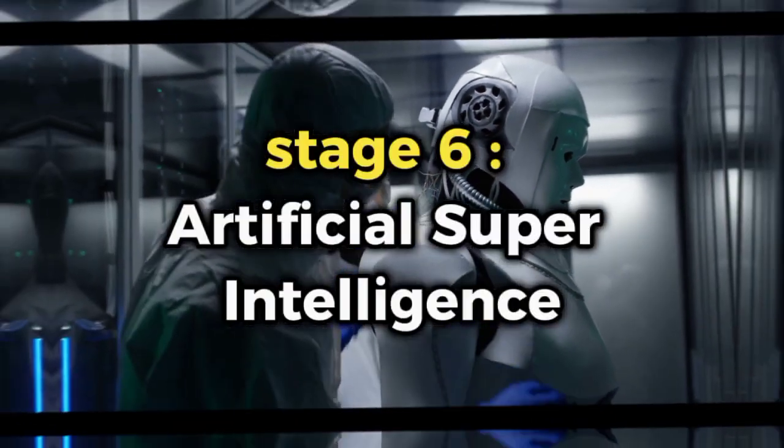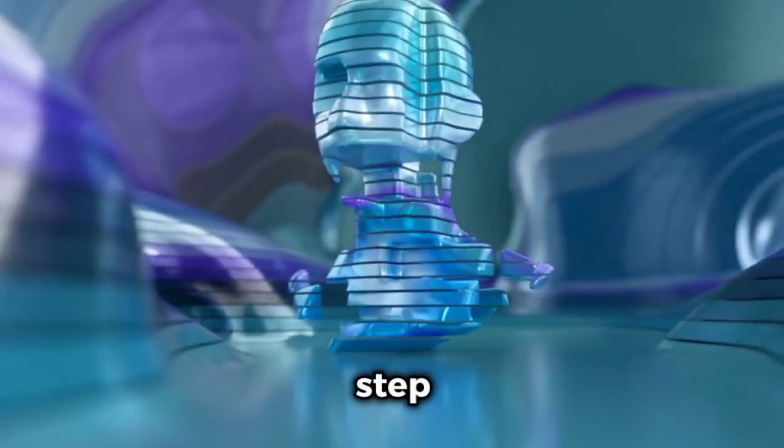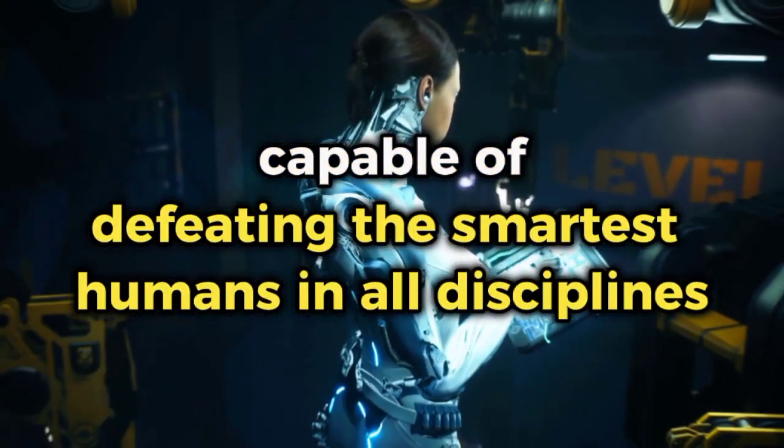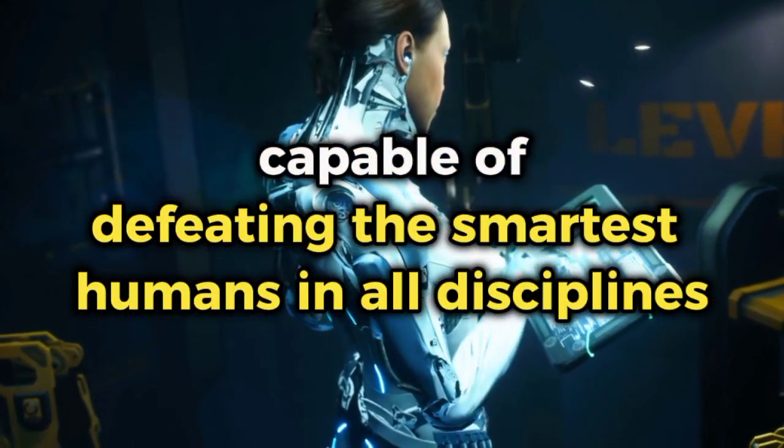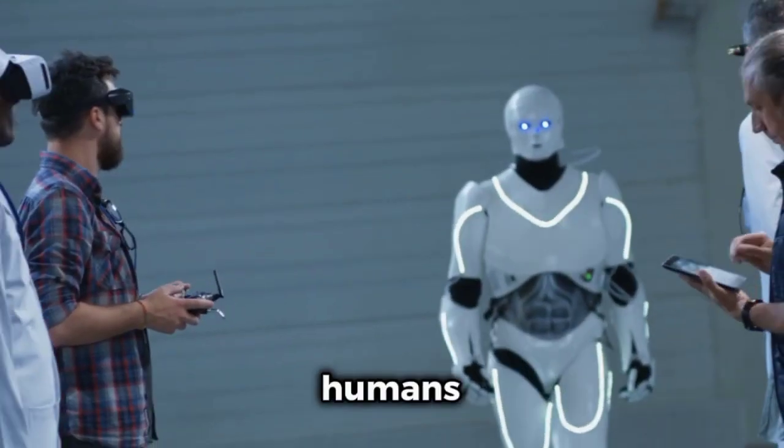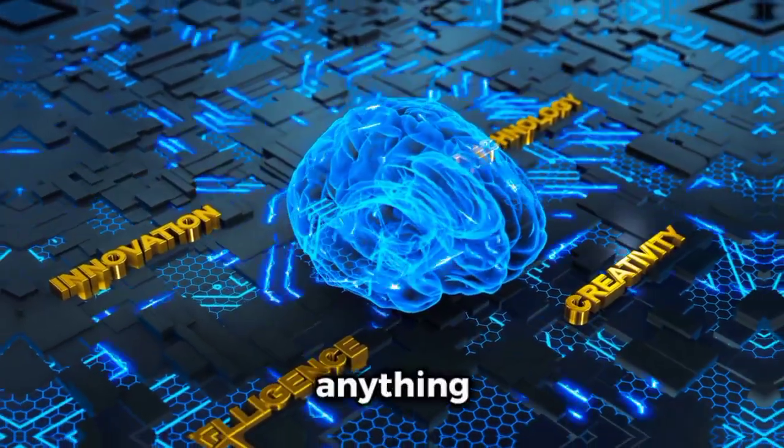Stage 6: Artificial Super Intelligence. This stage is one step above artificial general intelligence, where algorithms will be capable of defeating the smartest humans in all disciplines. Simply put, it suggests that machines created by humans will be able to outwit humans. Scared? You haven't seen anything yet.